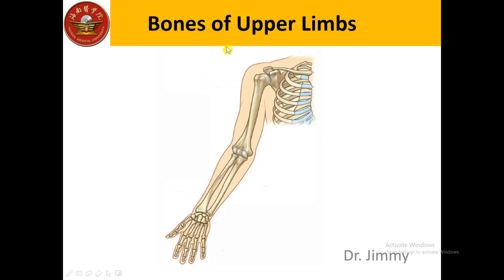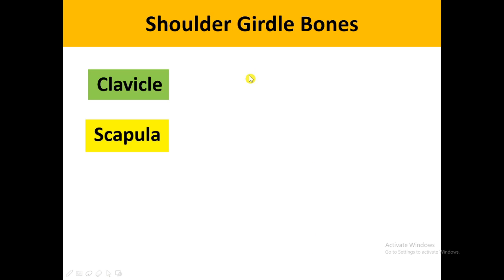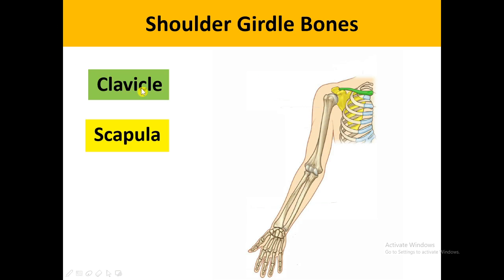Today we're going to talk about the bones of the upper limb. On one side we have a total of 32 bones. The shoulder girdle bones include two bones: clavicle and scapula. The arm bone is the humerus. The forearm has two bones: radius and ulna. The hand can be divided into the wrist, palm, and the fingers — with eight carpal bones, five metacarpals, and the phalanges.